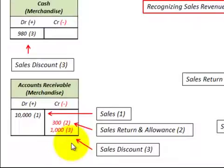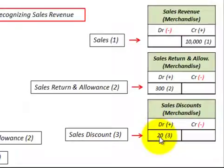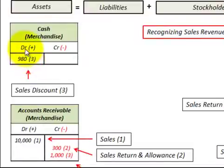Next, let's look at a sales discount. Say our customer is going to pay a thousand dollars on account, so we credit accounts receivable for a thousand dollars. The customer took the sales discount, so we debit the sales discount for twenty dollars, which increases the sales discount. The balancing entry is to debit cash for nine hundred eighty dollars, which is the actual cash received.